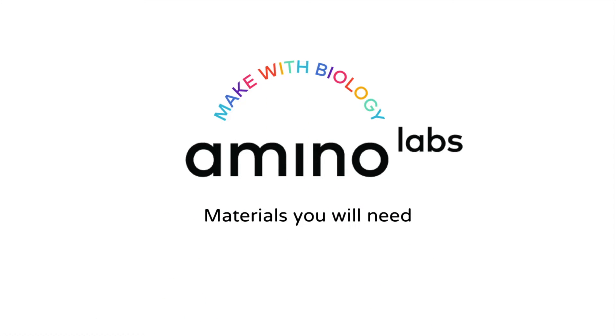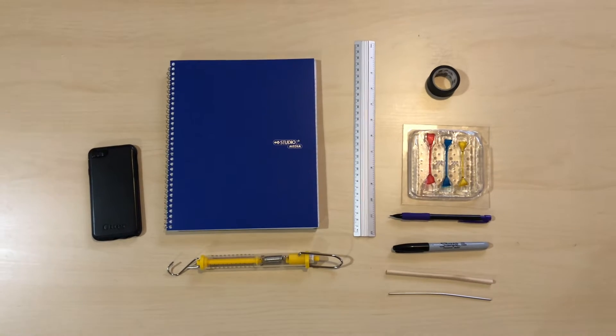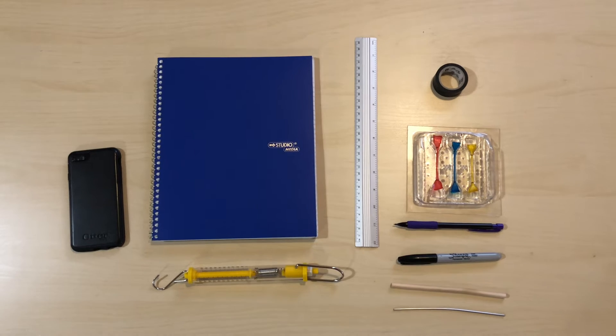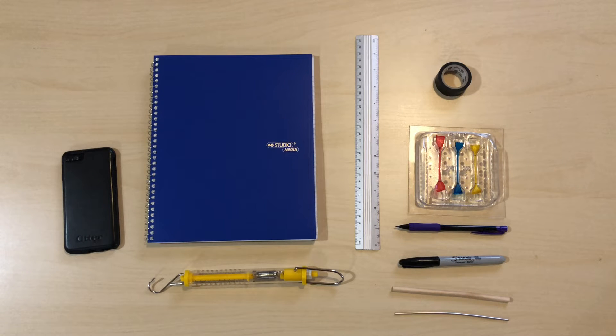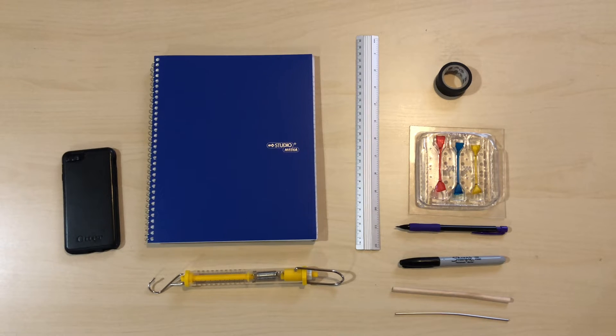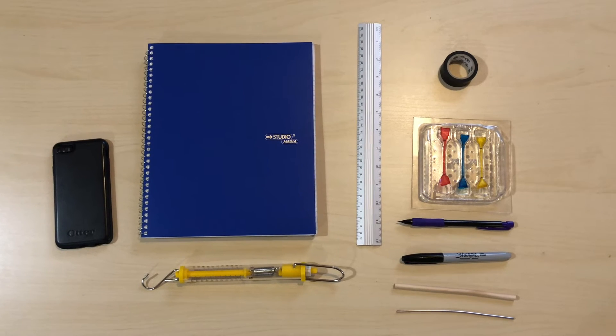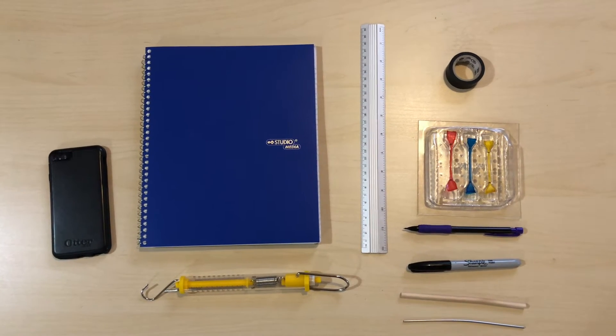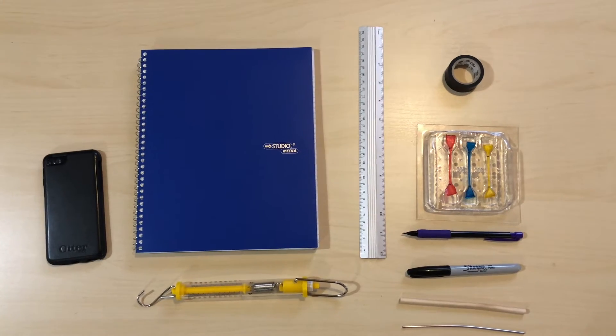You will need a phone, a notebook, a force meter that measures kilograms or newtons, a ruler, tape, a marker, a thin metal rod or dowel, and your molds with the three dumbbell bioplastics. They are not shown here but you will also need a computer, a partner, and two desks or tables.